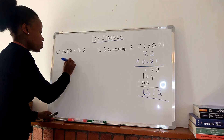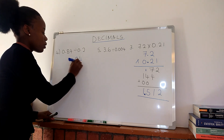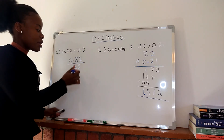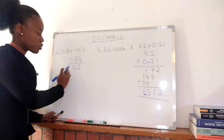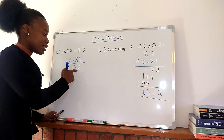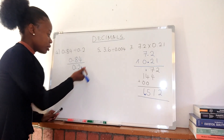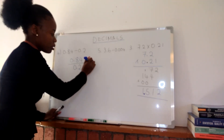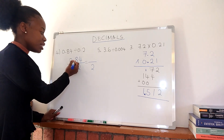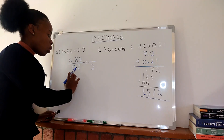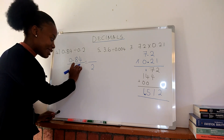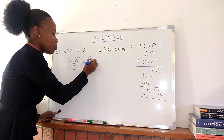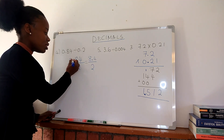Now we have 0.84 divided by 0.2. To divide, make sure your denominator is a whole number. So we multiply 0.2 by 10, which gives us 2. Since we multiplied the denominator by 10, we also multiply the numerator by 10: 0.84 times 10 gives us 8.4. You just move the decimal one step to the right in both numbers.